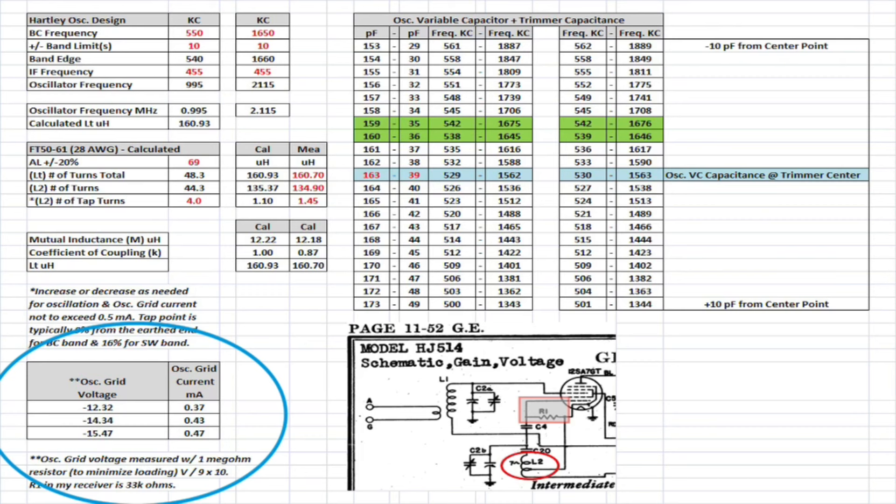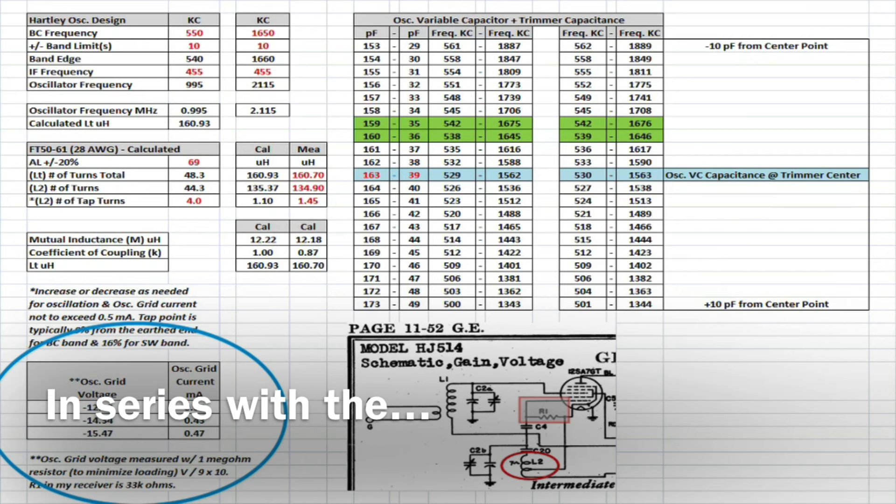R1, which in my case is 33,000 ohms. Many receivers, all American 5s, are 20,000 to 22,000. This one is a little different. So to measure the grid voltage, I didn't want to load the oscillator circuit down. You guys have probably seen me do this before in previous videos, a 1-megohm resistor. Take that voltage rating, divide by 9 times 10.